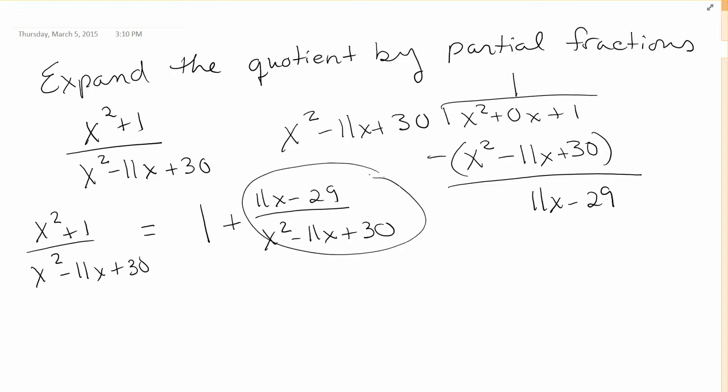So now the goal will be to decompose this fraction, 11x minus 29. Now the degree of the numerator is less than the degree of the denominator. So begin by saying 11x minus 29 over x squared minus 11x plus 30. You can write that as 11x minus 29 over, we can factor this as x minus 6 times x minus 5.